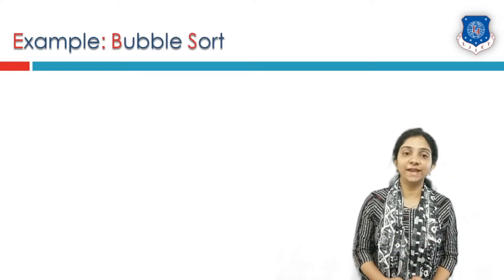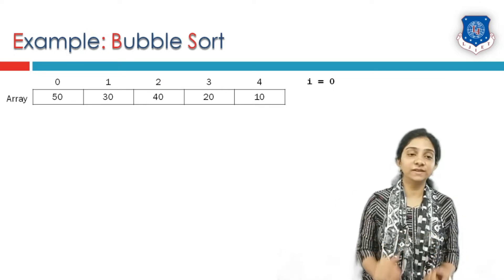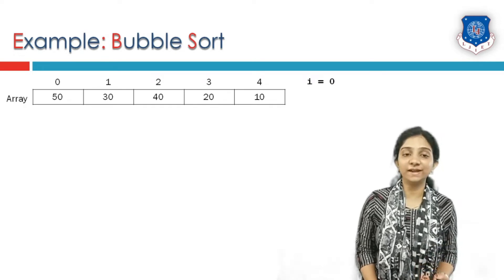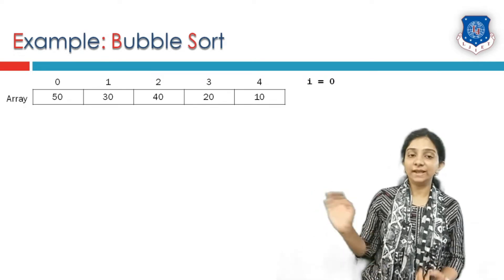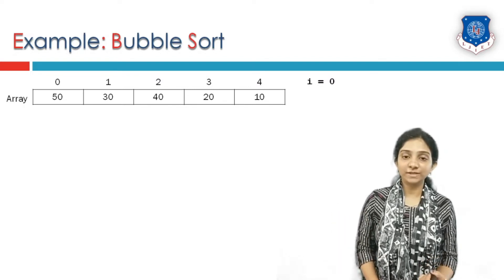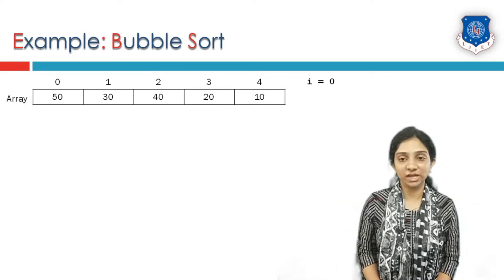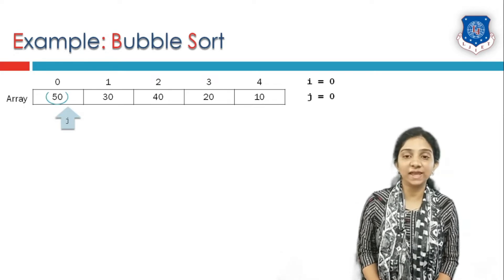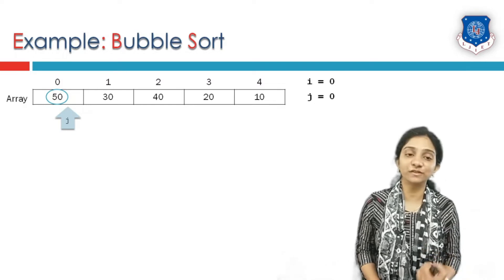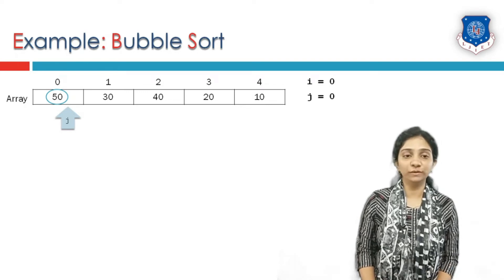Consider an array of 5 elements, so the index starts from 0 to 4. The elements are 50, 30, 20, 40, and 10 respectively. Initially the outer index i is initialized to 0, and in our second step we initialize j as our starting index also, so j is equal to 0.